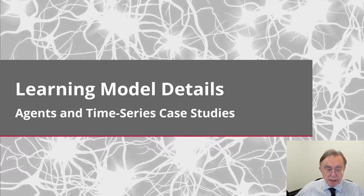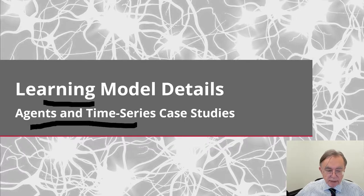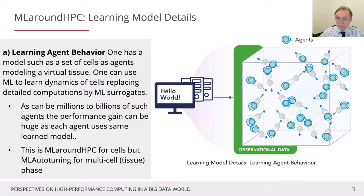Now we come to discuss the last part of ML around HPC, which has aspects of learning module details with some really non-trivial examples of agents and time series, data assimilation and things like that. Really quite exciting. This is represented with our usual picture here. These things at the beginning are meant to look a bit messy, because they're not just point particles, but agents, as you would get if you were doing, say, a virtual tissue simulation, where every point was really a cell with lots of internal structure.